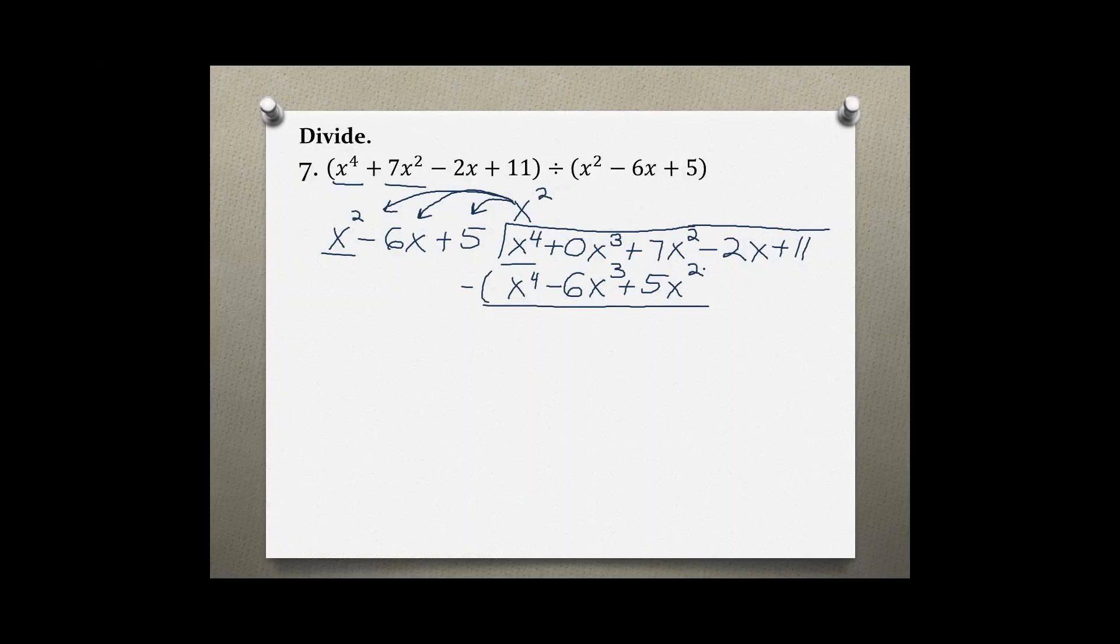Subtracting and changing all signs, we get x^4 minus x^4 is 0, 0 plus 6x cubed is 6x cubed, negative 7x squared minus 5x squared is plus 2x squared, and then we have to bring down the next remaining term, only one at a time.